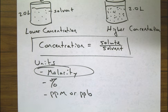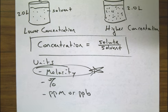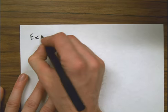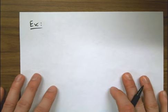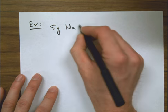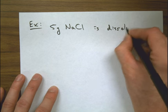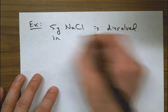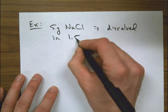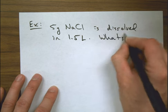So now what we're going to do is we're going to do an example problem where we work with this unit right here molarity to figure out how much stuff is in our solution. The example problem that I'm going to give you is a very common one. So you're going to write EX for example and then say I have 5 grams of sodium chloride. 5 grams NaCl is dissolved in 1.5 liters. What's the concentration of molarity?